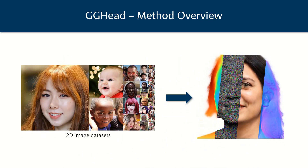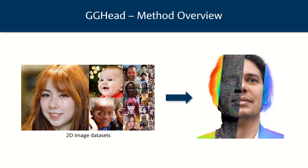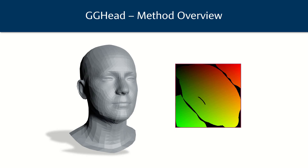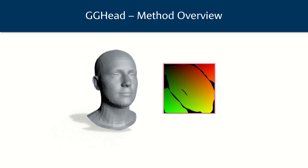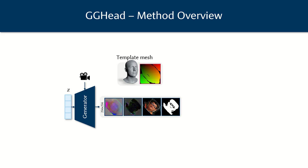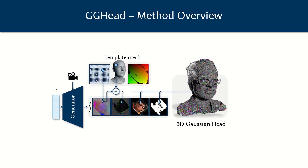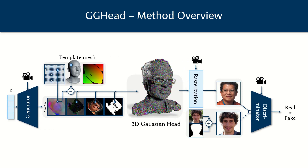Under the hood, GGHead adopts a 3D-GAN framework to learn 3D representations solely from large 2D image collections. We base our generations on a coarse template mesh with corresponding UV layout. Next, we employ a powerful 2D-CNN backbone to predict Gaussian attributes in the template's UV space. To obtain the actual 3D Gaussian primitives for rasterization, we sample the UV maps uniformly and move the primitives using the template mesh. The generated 3D Gaussian representation is then rasterized and supervised by the discriminator. To increase training stability, especially during early stages of adversarial training, we regularize the predicted position offsets, scales, and opacities.